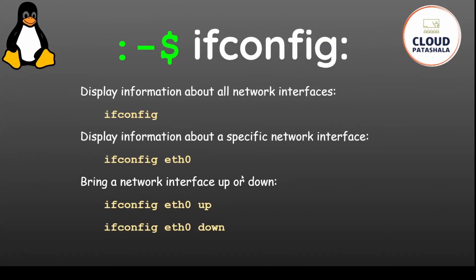In order to display the information of the network interfaces, you could just type ifconfig. To display information about a specific network interface card, you can mention the network interface ID — in this example it is ethernet 0. If you want to bring a network interface card up or down, you could use ifconfig ethernet up or ifconfig ethernet down.